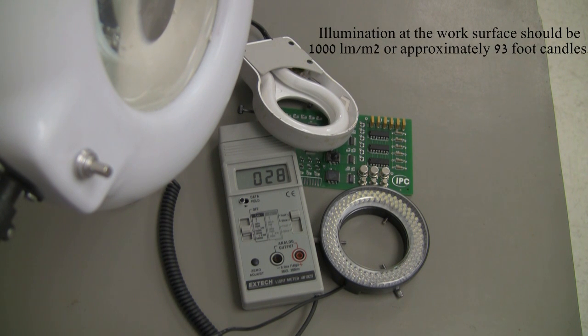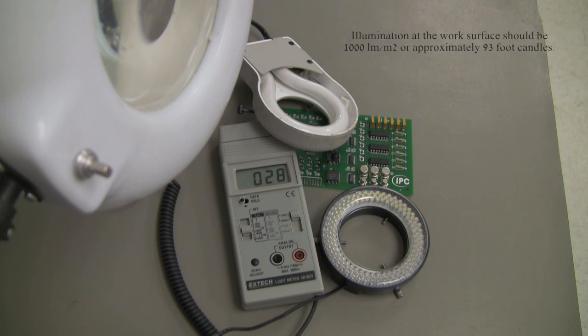It says supplemental lighting may be necessary to assist in visual inspection. Light sources should be selected to prevent shadows on the item being inspected, except those caused by the item being inspected.